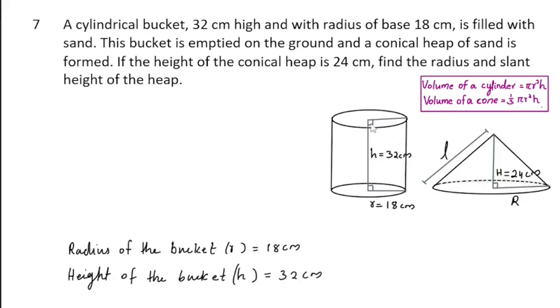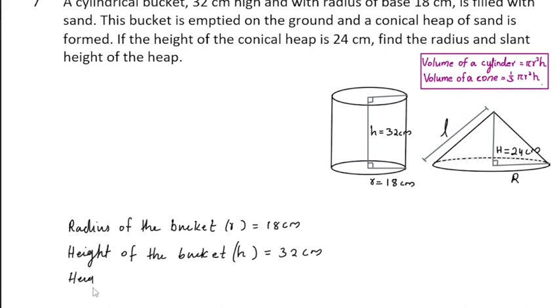The sand in this bucket is emptied on the ground to make a conical heap of sand. The height of the conical heap is 24 cm. We have to find the radius and the slant height of the conical heap. Let's find the radius first.